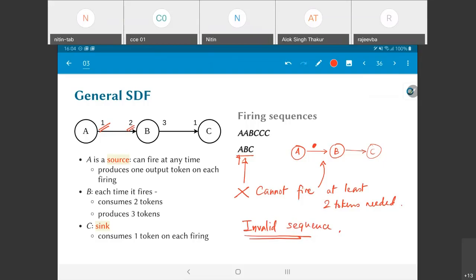If A fires one more time it will produce two tokens, there will be two tokens on the A to B channel, and B can then fire because it has sufficient tokens on the input. All I'm saying is this particular sequence ABC is invalid.